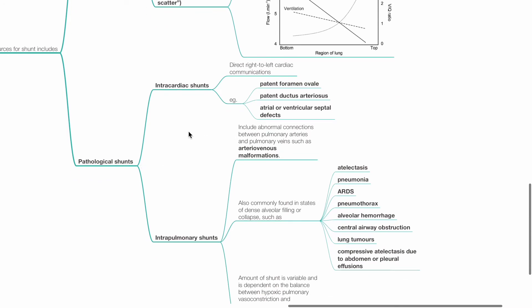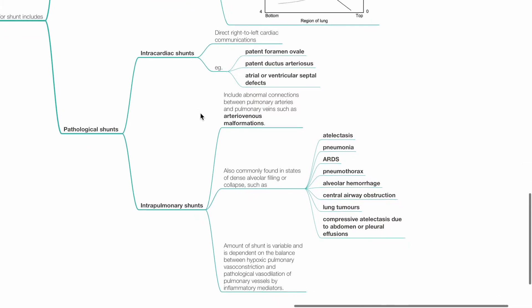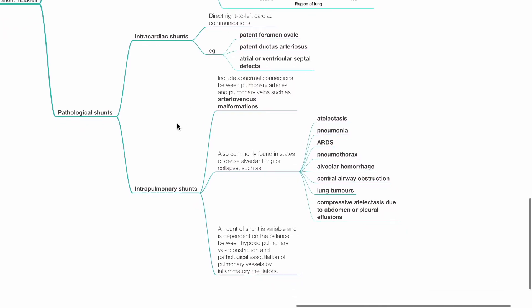Pathological shunts include intracardiac shunts and intrapulmonary shunts. Intracardiac shunts are direct right-to-left cardiac communications such as patent foramen ovale, patent ductus arteriosus, atrial or ventricular septal defects. Intrapulmonary shunts include abnormal connections between pulmonary arteries and pulmonary veins, such as AV malformations.